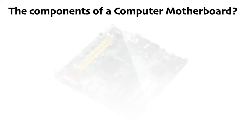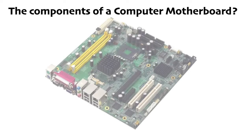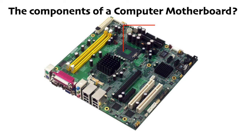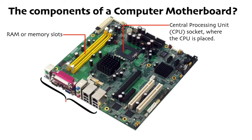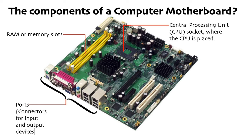The central processing unit CPU socket is where the CPU is placed. The ports and connectors allow the connection of input and output devices such as the keyboard, mouse, camera, and printers.